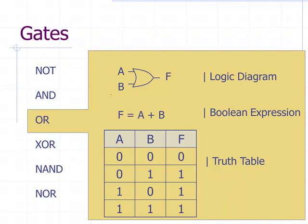Next is the OR gate with two inputs A and B, output F. The Boolean expression is A OR B, where the plus sign means OR. In the truth table: zero OR zero gives zero; zero OR one gives one; one OR zero gives one; one OR one gives one. It's always one unless both inputs are zero. Or put another way: if any one of the inputs is a one, the output is going to be a one — that's why it's called an OR gate.